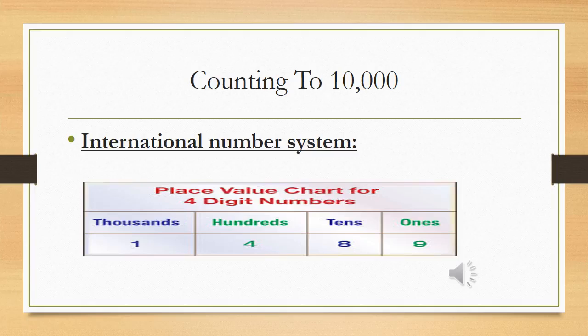There is a number: 1, 4, 8, 9. So we read this number as 1, 4, 8, 9. But when we are giving it the place value or the counting number, we are starting from the right to left — meaning from 9 to 8 to 4 to 1.